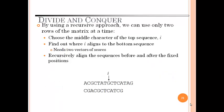Now the third technique is divide and conquer. By using a recursive approach we can use only two rows of the matrix at a time. For this technique, choose the middle character of the top sequence i. Find out where i aligns to the bottom sequence. Needs two vectors of scores. Recursively align the sequence before and after the fixed position.